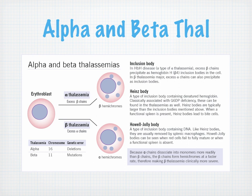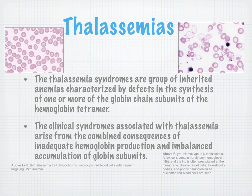Alpha and beta thalassemias are conditions in which we started with an erythroblast, and for whatever reason something went wrong. Now we have excess beta chains or excess alpha chains, giving us conditions called alpha thalassemia or beta thalassemia. The name is based on how many of which chains they have or don't have. The thalassemia syndromes are a group of inherited anemias characterized by defects in the synthesis of one or more of the globin chain subunits of the hemoglobin tetramer.